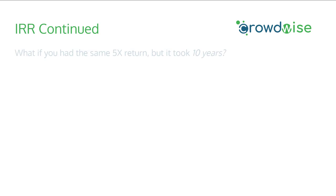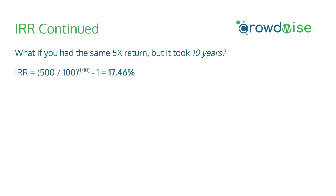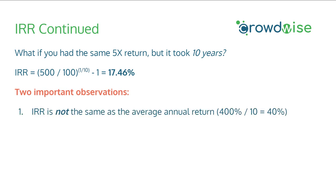Let's continue the IRR example, but tweak one number: what if you had that same 5x return but it took 10 years to return that capital? In this case, 500 divided by 100 raised to the 1/10 power gives you a roughly 17.5% IRR. It's important to note that IRR is not the same as average annual return. In the above example, you gained $400, which is a 400% gain — divided by 10 years that's a 40% average gain per year. However, that average annual return of 40% is very different from the 17.5% IRR, because of the compounding effect of returns.